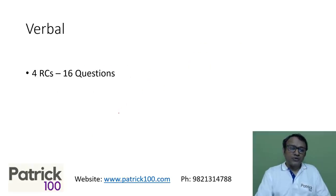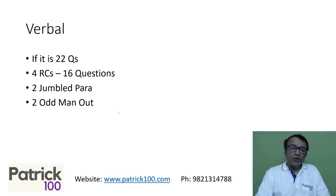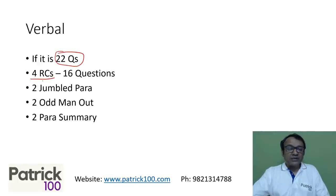Coming to verbal. So I'm expecting, it could be four RCs, 16 questions, if it's 22 questions, with two jumble para, two odd man out, two para summary. I mean, if it is 22 questions paper pattern, I'm expecting number of RCs to remain the same four. But instead of the 18 questions which was there, you could have 16 questions, a reduction of two questions.